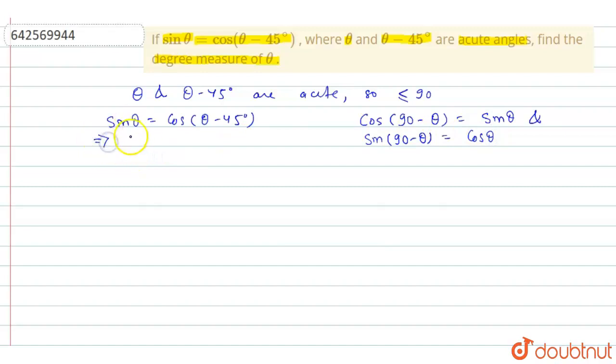So this equation can be written as cos of 90 minus theta in place of sin theta is equal to cos theta minus 45 degree.